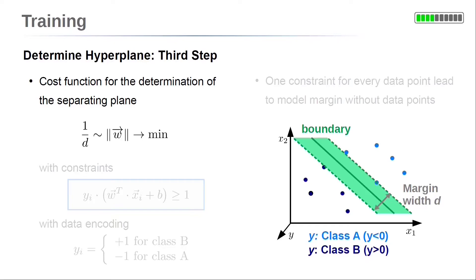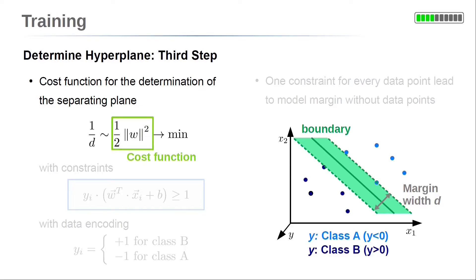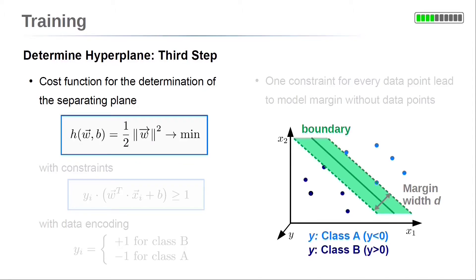Finally, in the third step, we formulate our cost function and corresponding constraints. In order to maximize the width of the margin, we need to minimize the length of the vector w. For convenience, we use the square of the vector's length and a factor one-half. This gives our cost function, and minimizing it maximizes the margin width. However, without any constraints, this would give a vanishing vector length and thus an infinitely large margin.